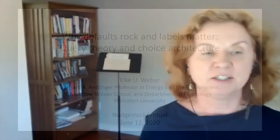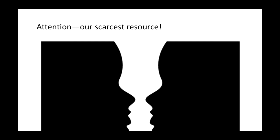Look at this image. Attention really is our scarcest resource. You can see either the candlestick or the two children looking at each other. You can switch back and forth, but you can't see them both at the same time because our attention is finite. It turns out the same thing holds when we make decisions.